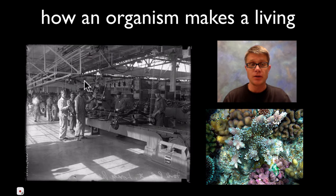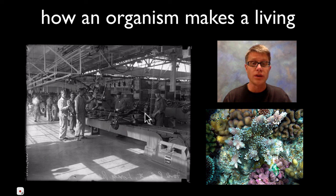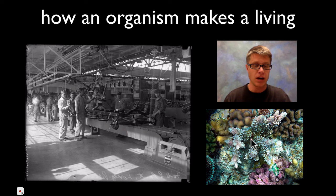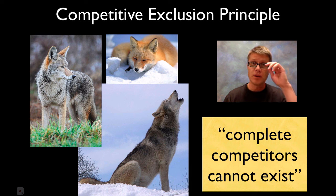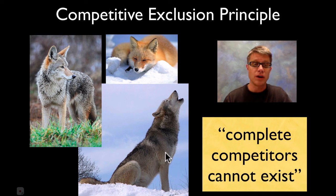Another way to think about a niche is simply its job. Just as each worker on an early Ford assembly line has a specific role, each coral in a reef plays a different role within the ecosystem. They are constantly in competition with each other. This leads to what's called the competitive exclusion principle: you can never have two different species filling the same niche at the same time. Complete competitors simply don't exist — it's like a fairy tale.